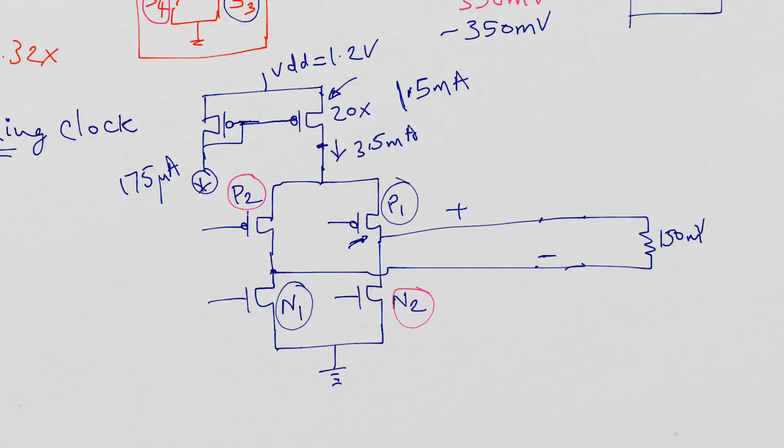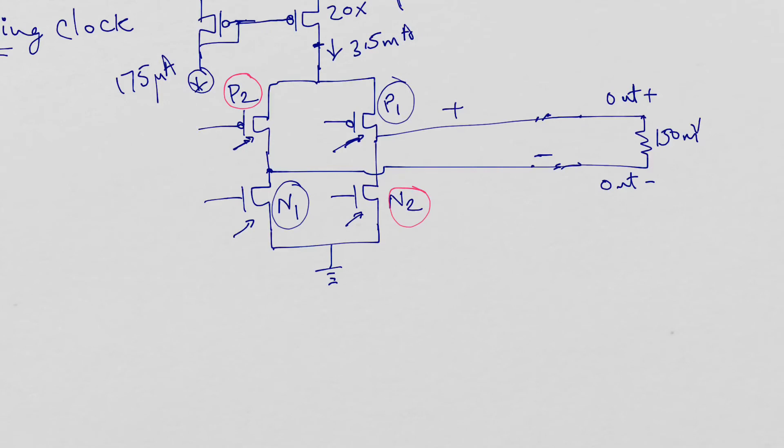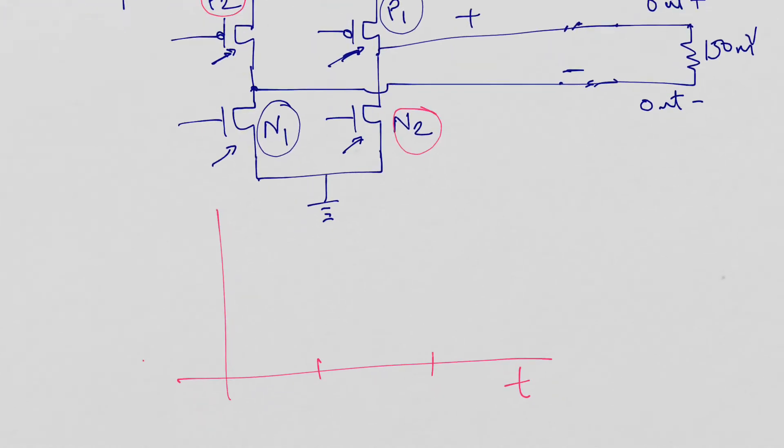I had to adjust the strength of p1 and n1 and p2 and n2. P1 and p2 are the same size, so I could get a common mode at this level. When you're switching, so this is the time and I'm switching at a nanosecond, every nanosecond I'm switching the data.